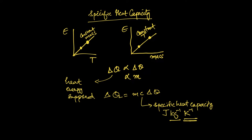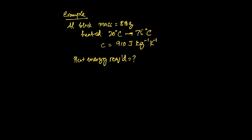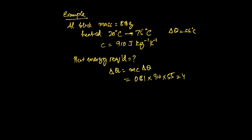Let's work through an example. We have a block of aluminum with a mass of 810 grams being heated from 20 degrees Celsius to 75 degrees Celsius, so delta theta is 55 degrees. Its specific heat capacity is 910 joules per kilogram per kelvin. What heat energy is required? We use delta Q equals m times c times delta theta. Converting mass to kilograms: 0.81 times 910 times 55, which gives us 4.1 times 10 to the 4 joules.